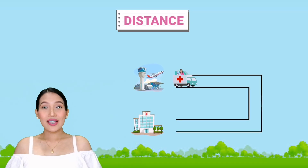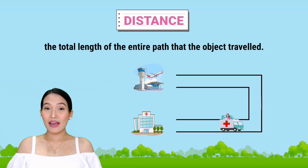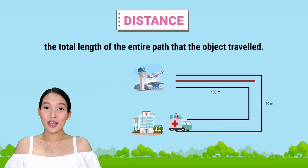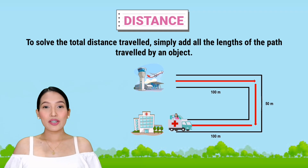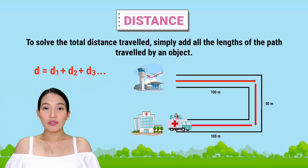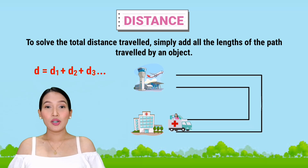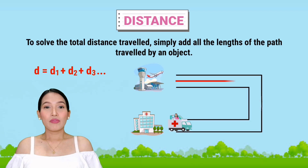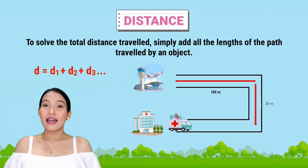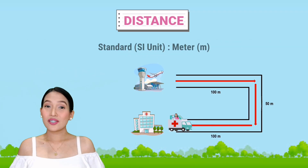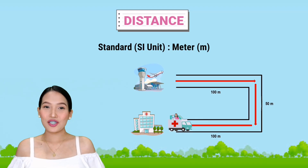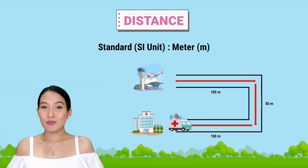Therefore, distance is referred to as the total length of the entire path that the object traveled. In Tagalog, ito po ang kabuoang haba ng nilakbay ng isang object. To get the total distance traveled, we simply add all the lengths of the path: distance equals d1 plus d2 plus d3, and so on. The standard unit of distance in the international system of units is meter, represented by a small letter M.